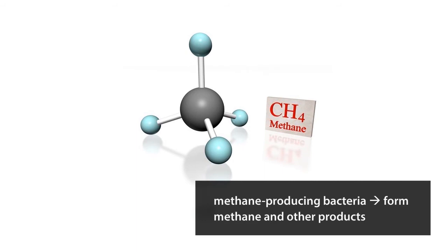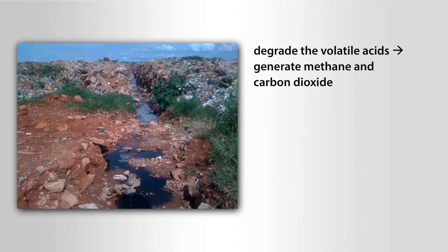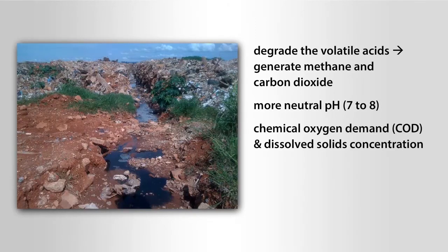In the next phase of decomposition, methane-producing bacteria utilize carbon dioxide, hydrogen, and inorganic acids to form methane and other products. During this stage of anaerobic decomposition, the methanogenic bacteria become more prominent. These methanogens degrade the volatile acids, primarily acetic acid, and use hydrogen to generate methane and carbon dioxide. This degradation results in a more neutral pH of 7 to 8 as the organic acids are consumed. A decrease in chemical oxygen demand (COD) and dissolved solids concentration within the leachate also occurs.